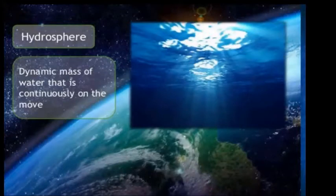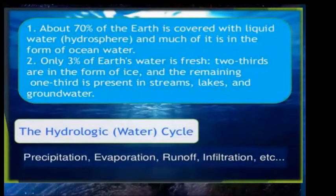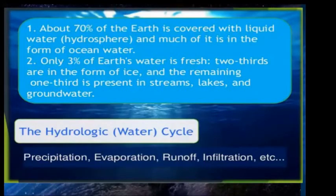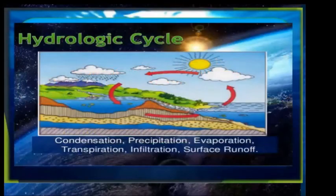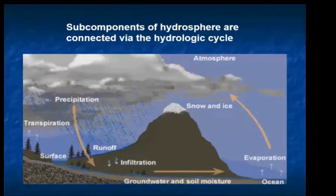The hydrosphere is the dynamic mass of water that is continuously on the move. About 70% of the Earth is covered with liquid water, much of it in the form of ocean water. Only 3% of Earth's water is fresh water — two-thirds of that is in the form of ice, and the remaining one-third is present in streams, lakes, and groundwater. Part of the hydrosphere is the hydrologic or water cycle, which includes precipitation, evaporation, runoff, and infiltration. This cycle connects the subcomponents of the hydrosphere through condensation, precipitation, evaporation, transpiration, infiltration, surface runoff, and more.